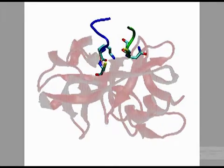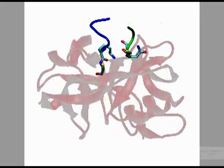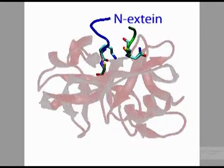The Extein on the N-terminal side of the Intein, or the N-Extein, is shown in blue, while the Extein on the C-terminal side of the Intein, or the C-Extein, is shown in green.